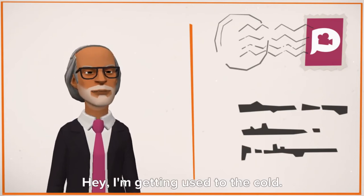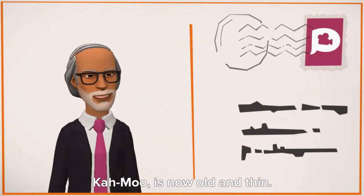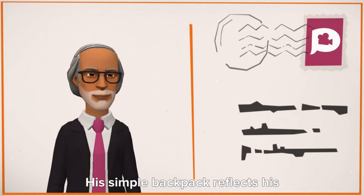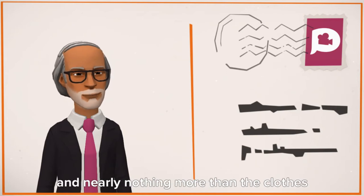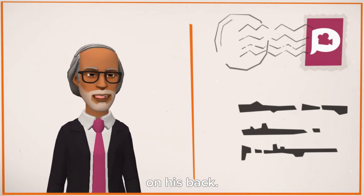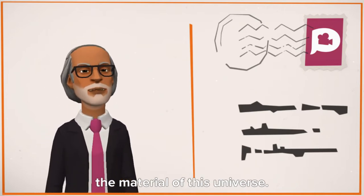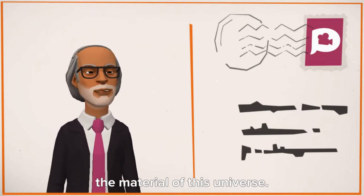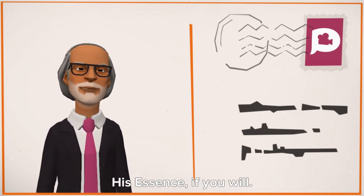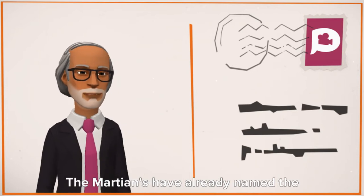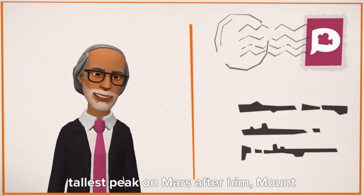Back on Mars again. Hey, I'm getting used to the cold. Camus is now old and thin. His simple backpack reflects his need for almost nothing. He travels with his walking stick and nearly nothing more than the clothes on his back. He claims to be totally detached from the material of this universe. What remains is the spirit of a man. His essence. The Martians have already named the tallest peak on Mars after him. Mount Camus.